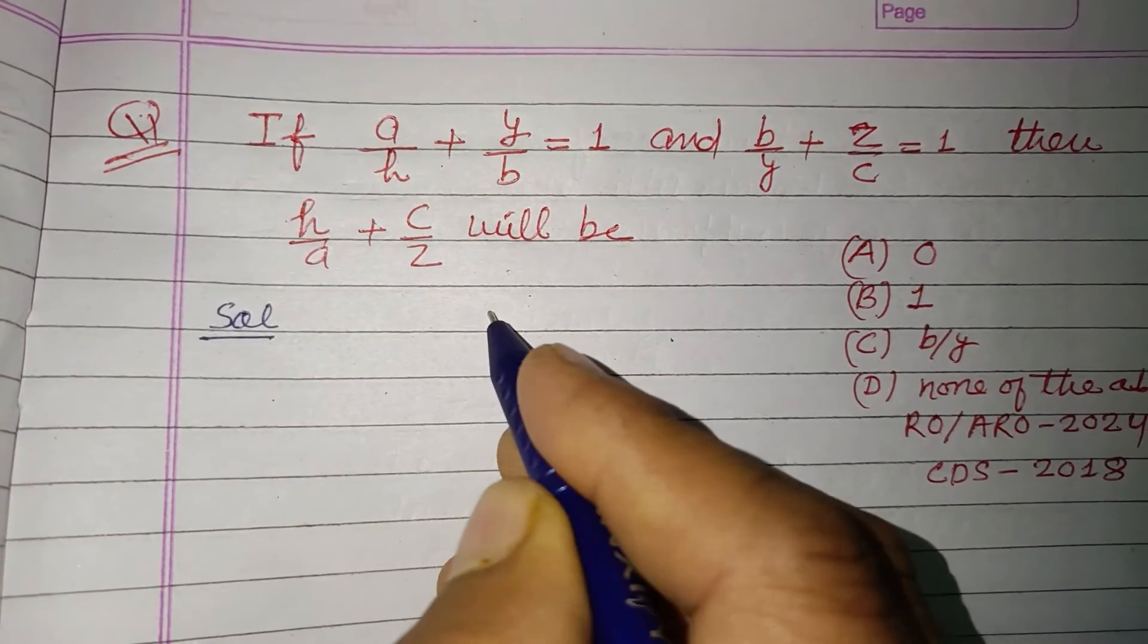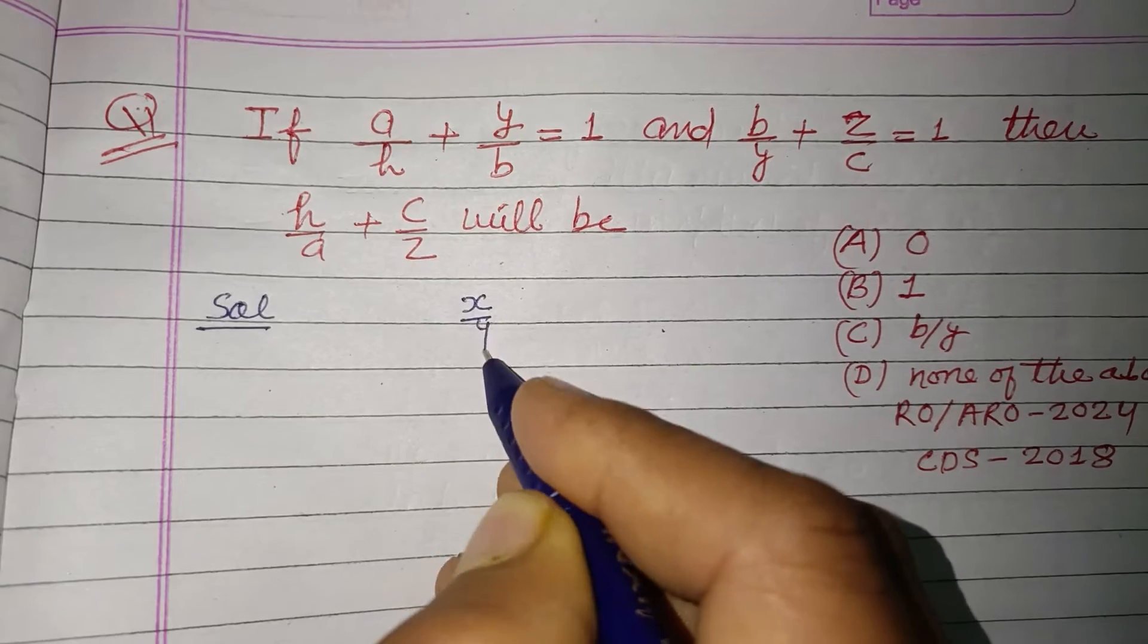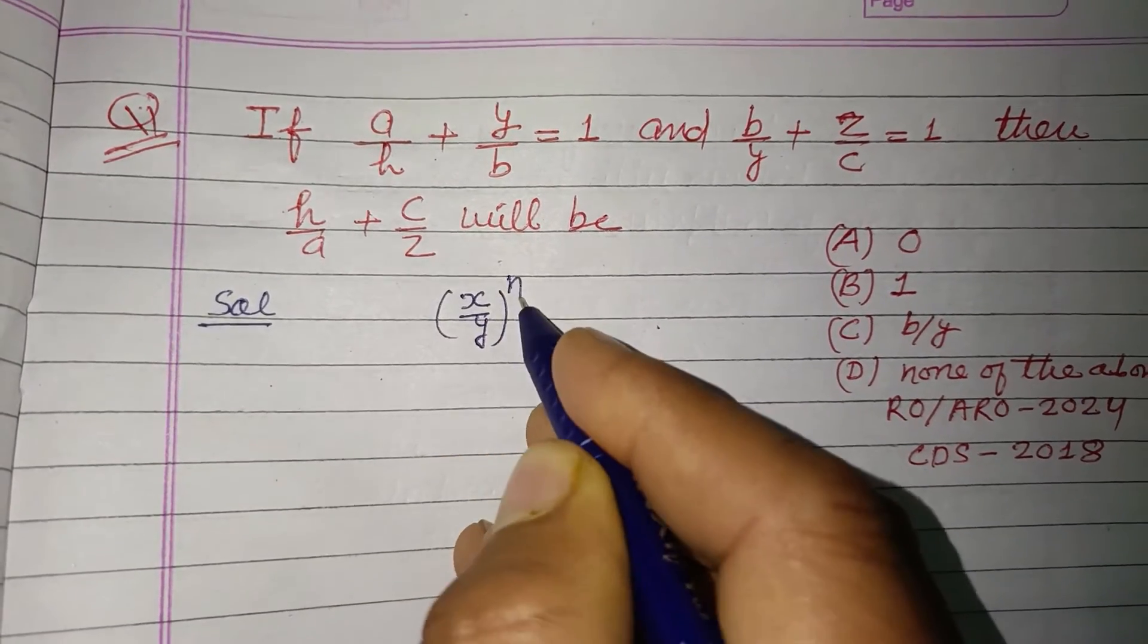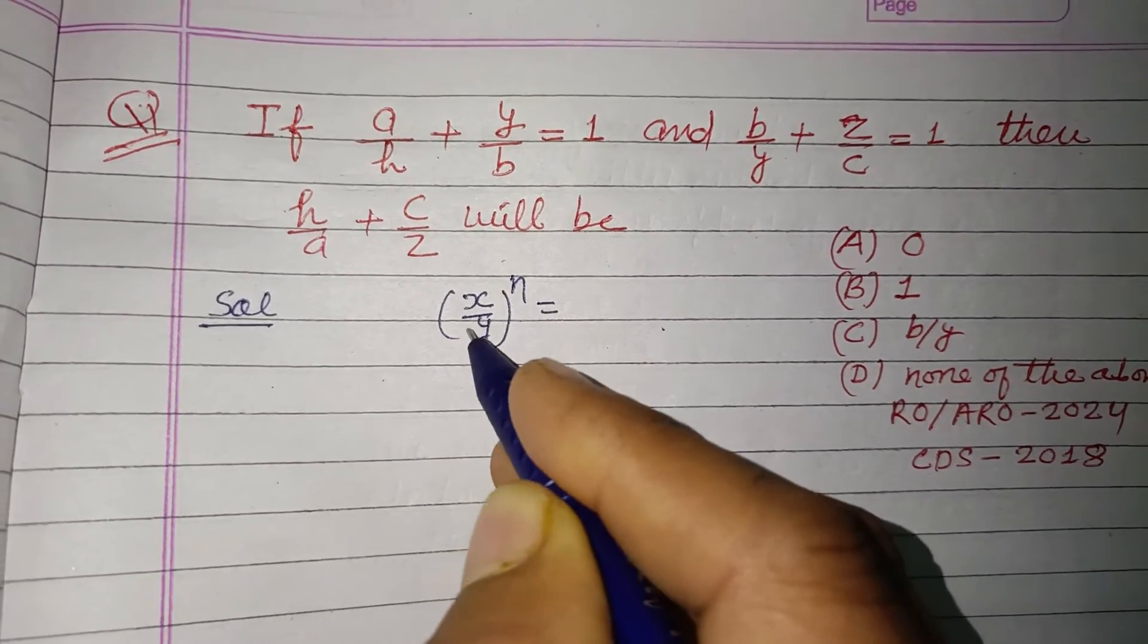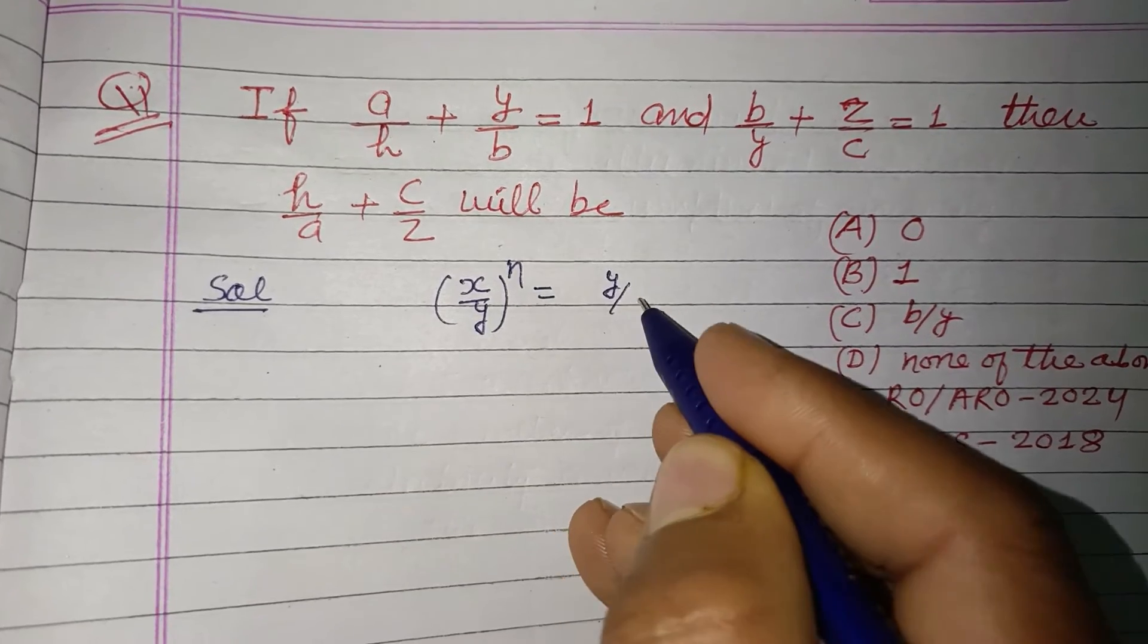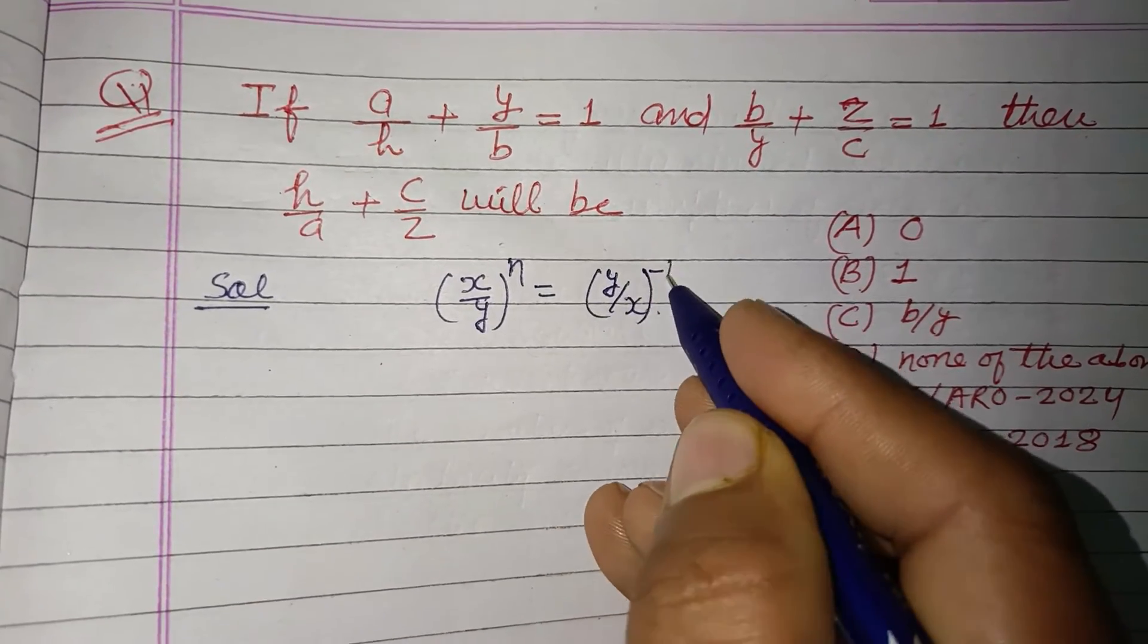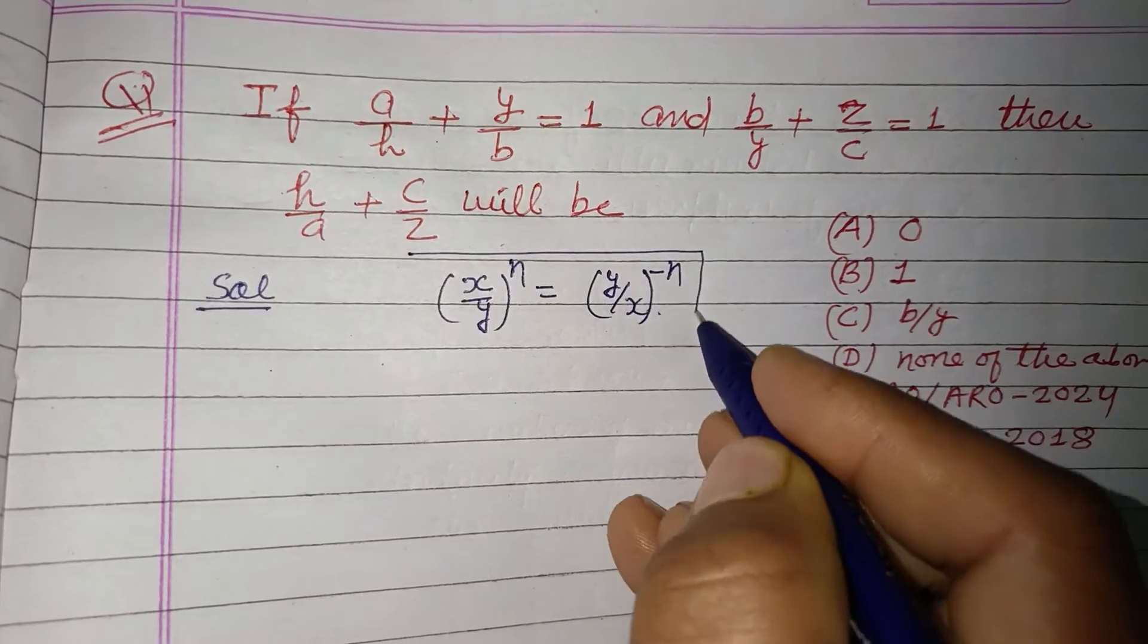So students, we learn the property that (x/y)^n equals, when we inverse this, (y/x)^(-n). So this is the formula from exponents.